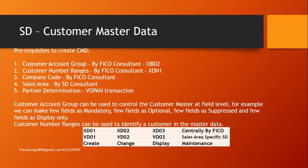These are the prerequisites to create customer master data. First, we must have a customer account group, defined by a FICO consultant using transaction code OBD2. Customer number ranges are also defined by the FICO consultant using transaction code XDN1. The company code is normally created by the FICO consultant, but in our demo system we have already defined and assigned it in the enterprise structure. Sales area is 100% done by the SD consultant. Before creating customer master data, we must have completed partner determination, so the system will automatically propose all partner functions into the customer master data sales area data.